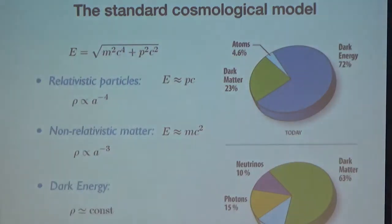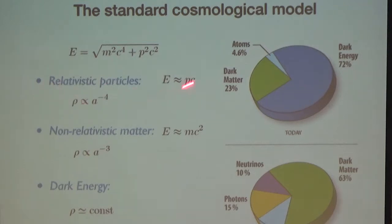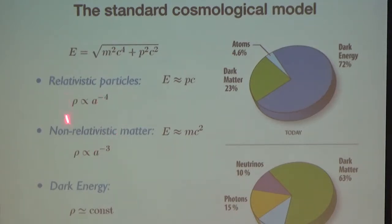Let me tell you what are the basic ingredients you need to build a viable cosmological model. First, we need relativistic particles — where the energy is essentially proportional to the momentum. Using the Stefan–Boltzmann law, the density goes like T⁴, and since T goes like 1/a, the density of relativistic particles decays as 1/a⁴. This means they matter a lot in the early universe but much less in the late-time universe.